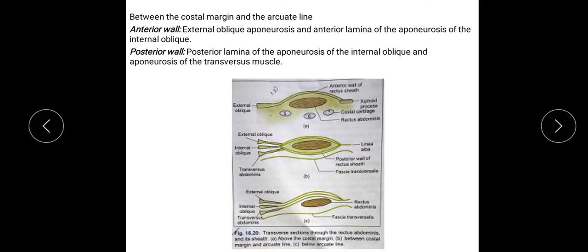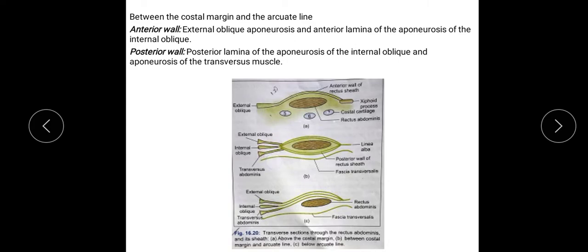The second formation is between the costal margin and the arcuate line. The anterior wall is formed by external oblique aponeurosis, and deep to it there is the anterior lamina of the internal oblique aponeurosis. The posterior wall is formed by the posterior lamina of the aponeurosis of internal oblique and the aponeurosis of transversus abdominis muscle, forming the walls between the costal margin and the arcuate line.